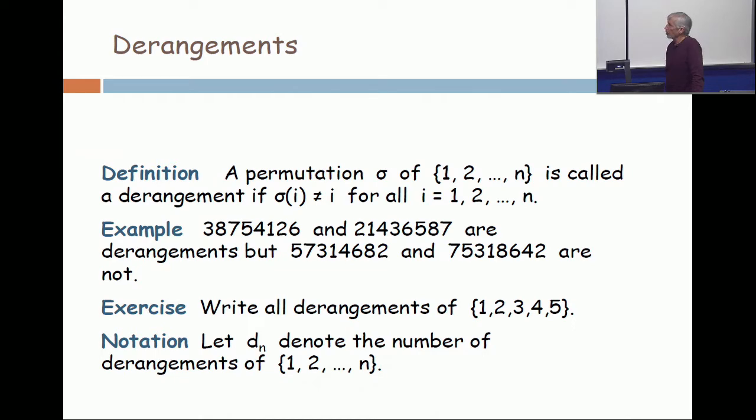I give you two examples. Also look at 2, 1, 4, 3, 6, 2, 1, 4, 3, 6, 5, 8, 7. I was just kind of permuting consecutive ones. But you never have integer i in position i. So those are derangements.